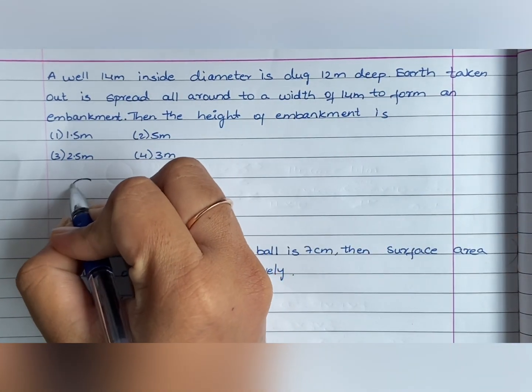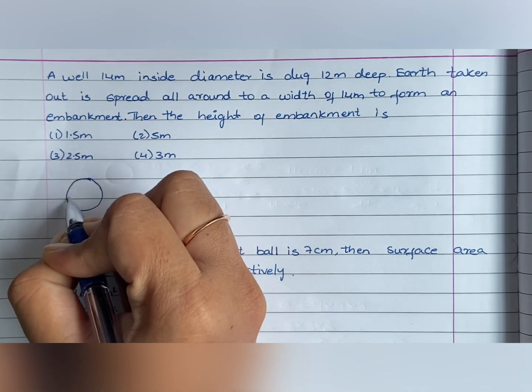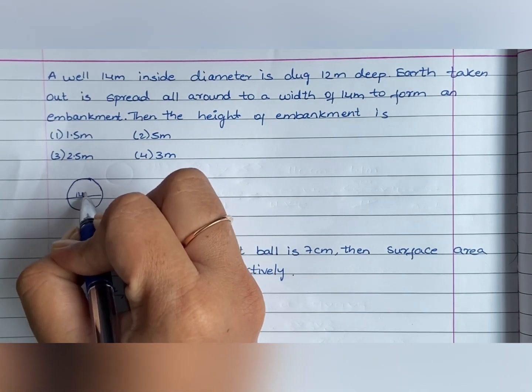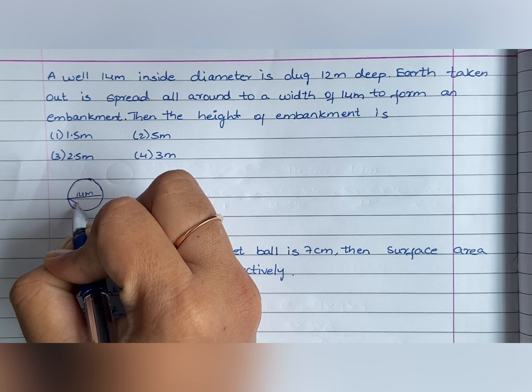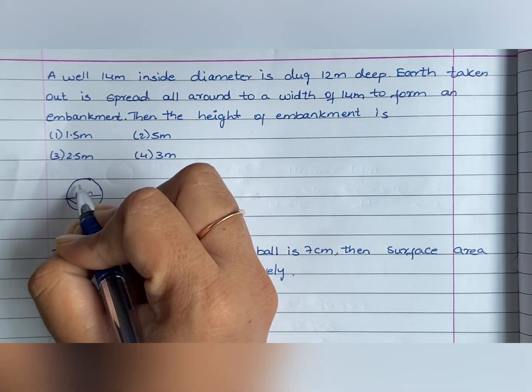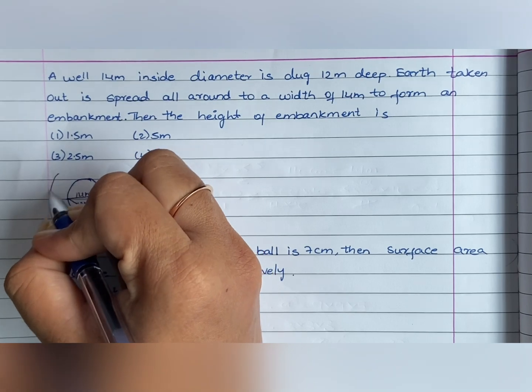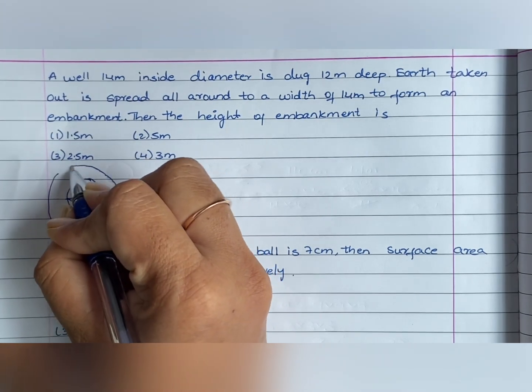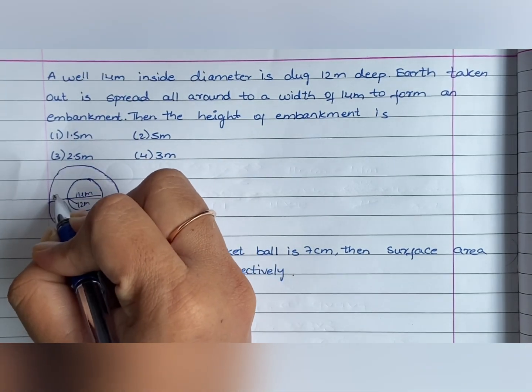So, let me tell you, this is the diameter of 14 meters. The depth is 12 meters. This is the width of the embankment. Here, the height of the embankment. This is the height of 14 meters.